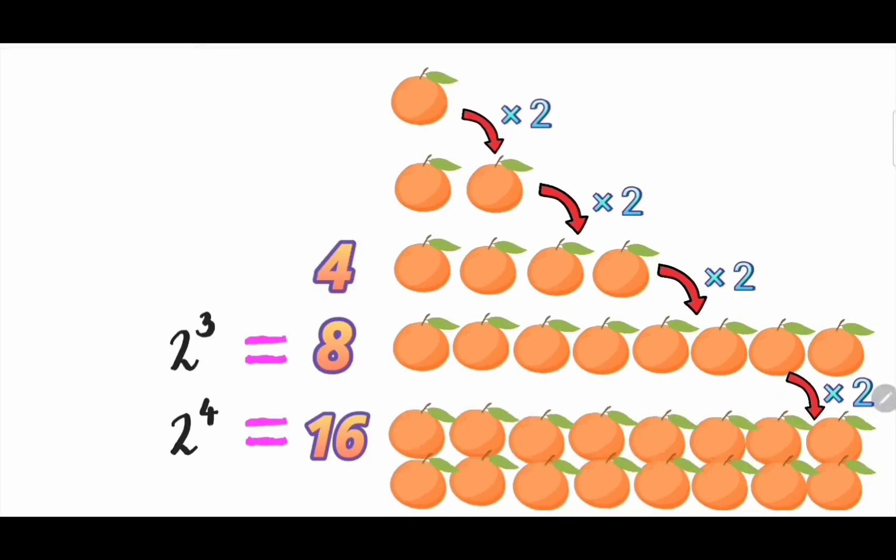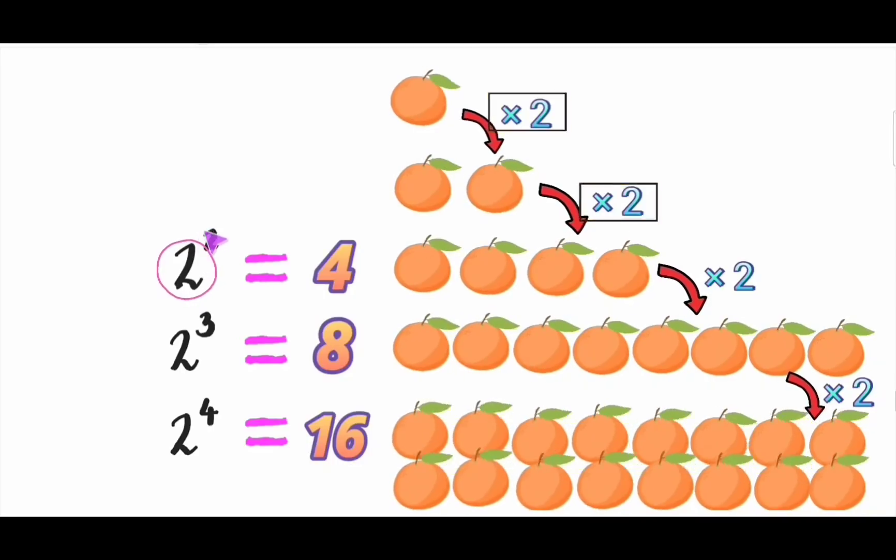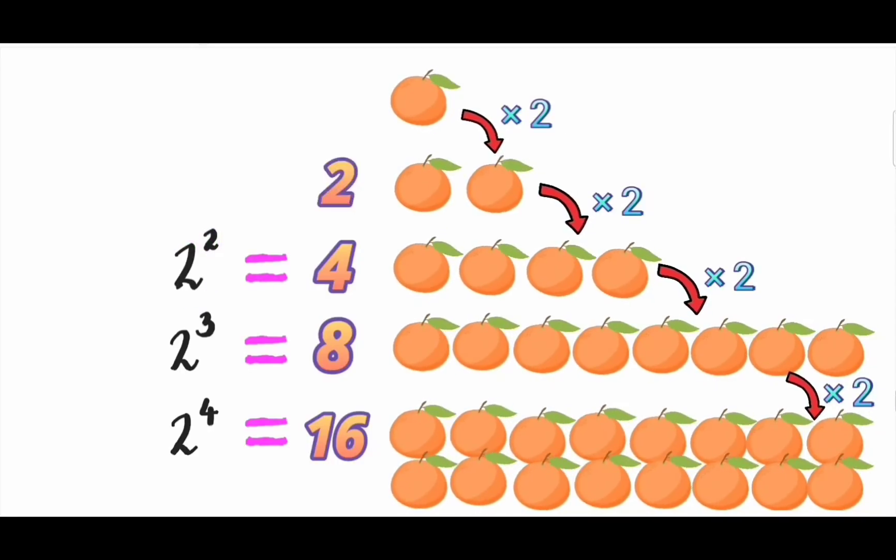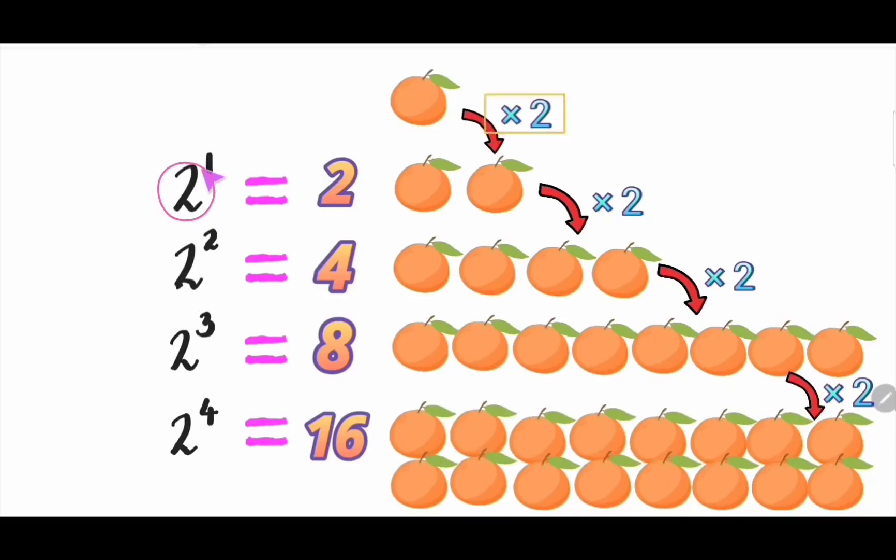Next 4. You can write this as 2 power 2 since we double an orange twice successively. Then 2. You can write 2 power 1 since you double an orange once.